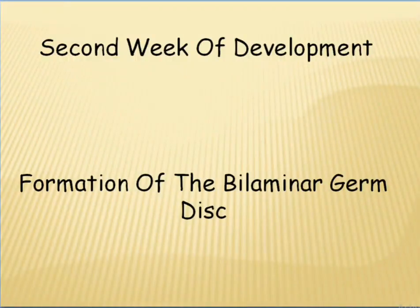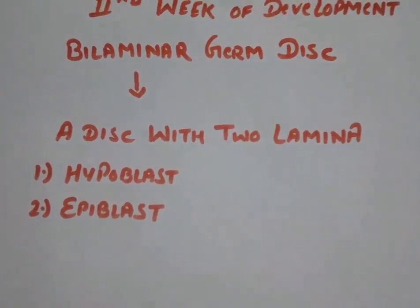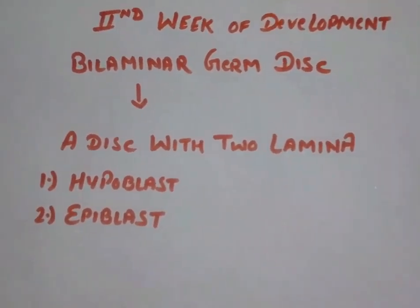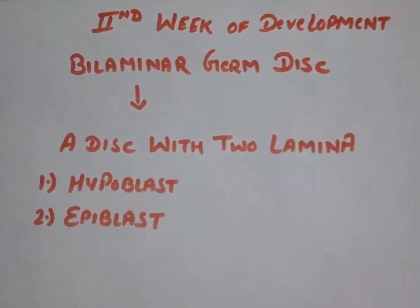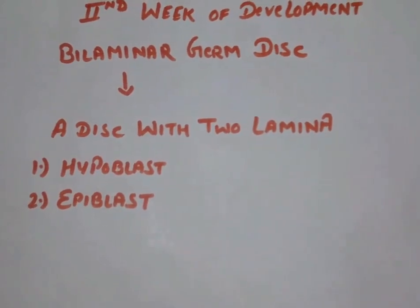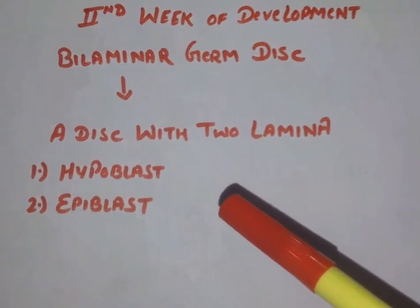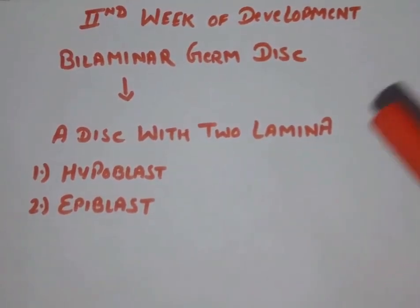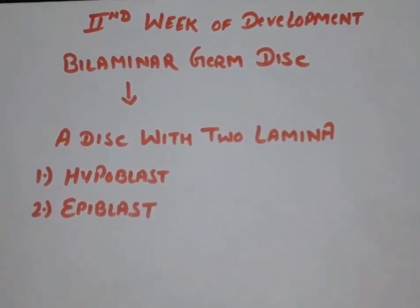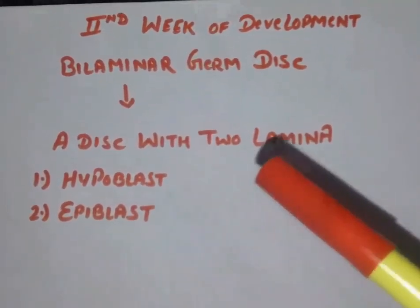Hello friends. In this video we will study about the second week of development, that is the formation of the bilaminar germ disc. The bilaminar germ disc generally means a disc containing two laminae, meaning two surfaces or two layers, which are known as the hypoblast and the epiblast. We will study how a blastocyst undergoes implantation and results in the formation of a bilaminar germ disc with hypoblast and epiblast.